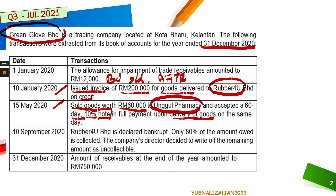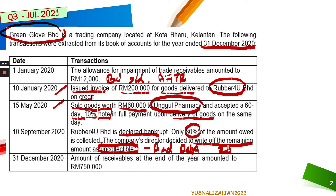On 10th of September, Rabel was declared bankrupt and 80% of the amount owed was collected. The company director decided to write off the remaining 20% as uncollectable, meaning it is considered a bad debt. The last piece of information is the amounts of receivable at the end of the year, 31st of December, which is the balance before any adjustments that may have taken place.